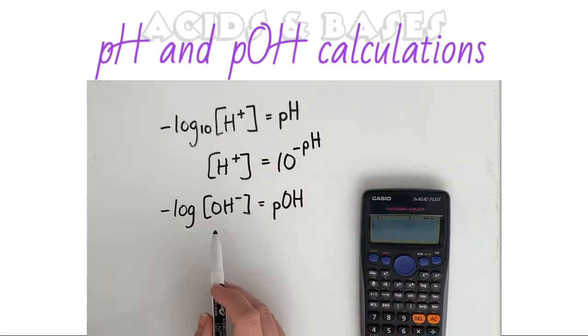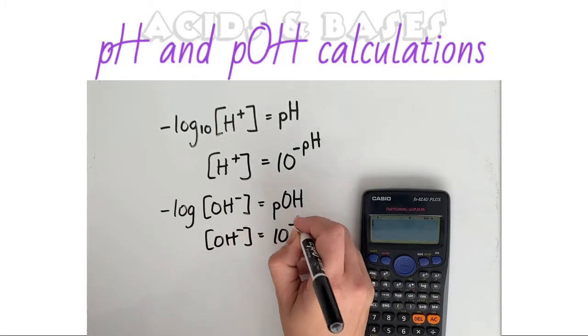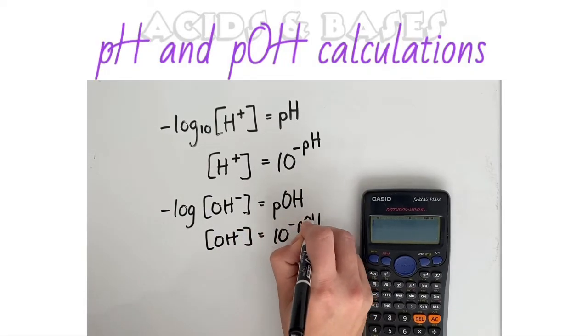In the same way, the concentration of the hydroxide ions is equal to 10 to the negative pOH value.